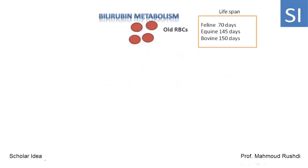Bilirubin metabolism: As we know, red blood cells have a lifespan in the blood circulation. For example, the lifespan for red blood cells in felines is 70 days, in equine is 145 days, and in bovine is 150 days. When red blood cells become aged or old, they are removed from the circulation by the reticuloendothelial cells.